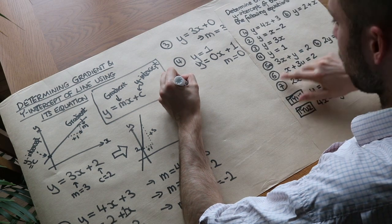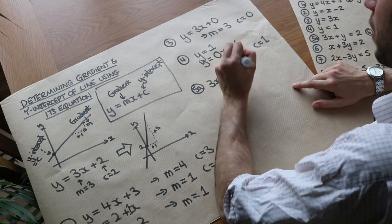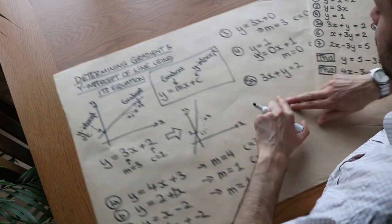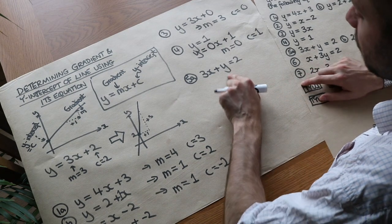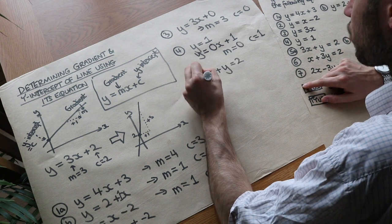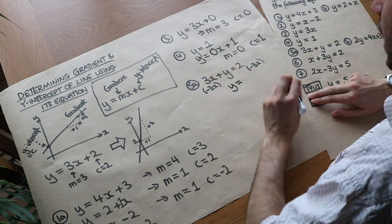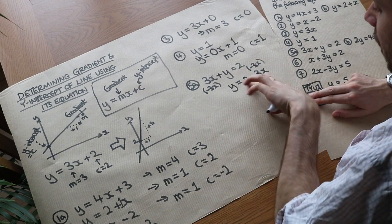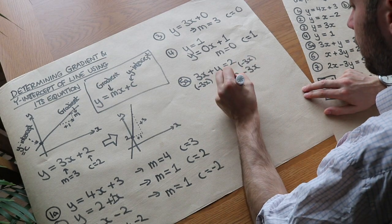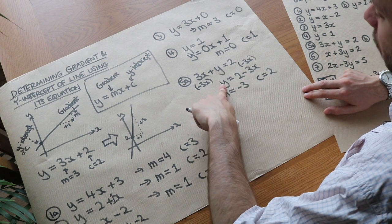On to question 5a: we've got 3x plus y is equal to 2. This is definitely not in the standard form. The key is to make y the subject. To get y on its own, notice we're adding 3x to y — we want to get rid of that plus 3x, so we just subtract 3x from both sides. Subtracting 3x gets rid of that plus 3x and we're left with y equals 2 minus 3x. Don't worry about the x term not being first — we still read off the number in front of the x, which is minus 3. So the gradient m is minus 3, and the constant term 2 is the y-intercept.